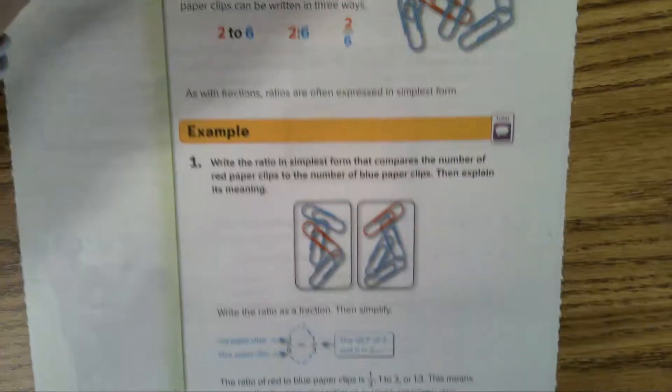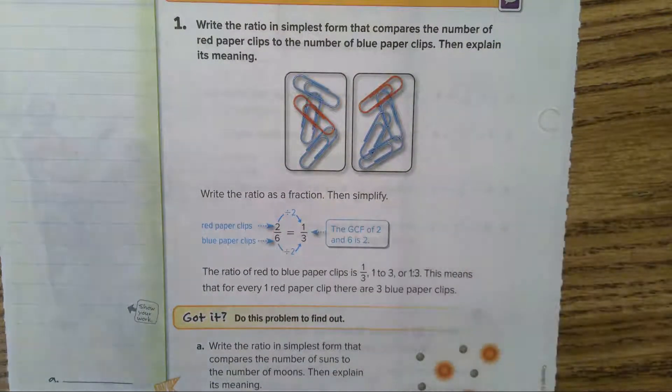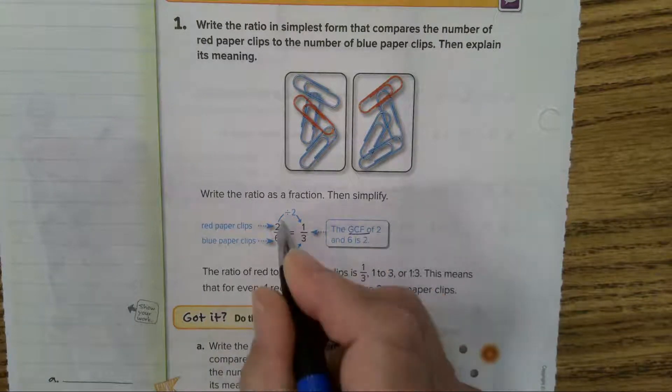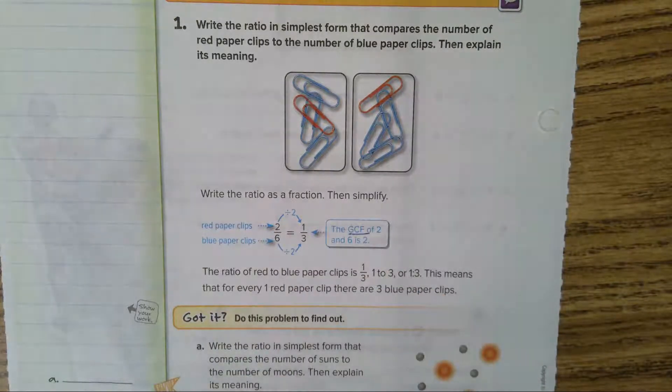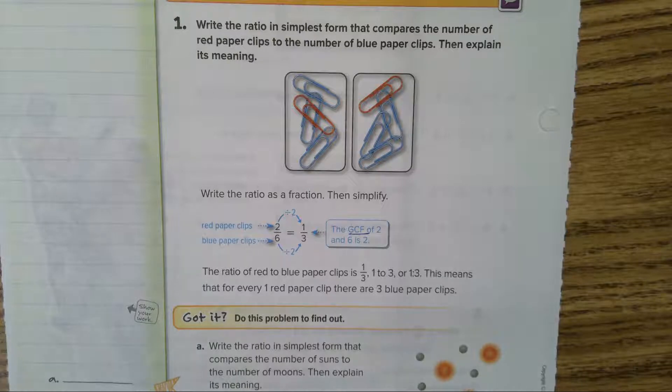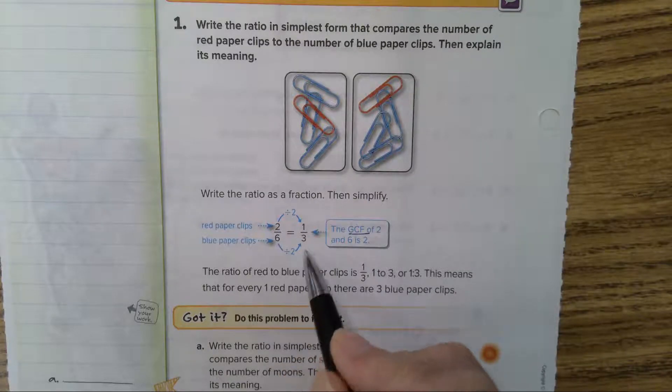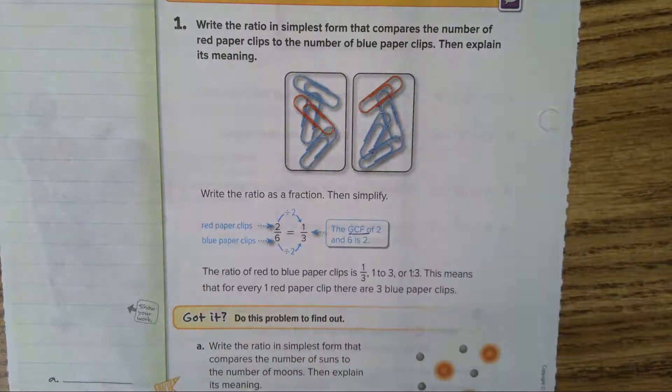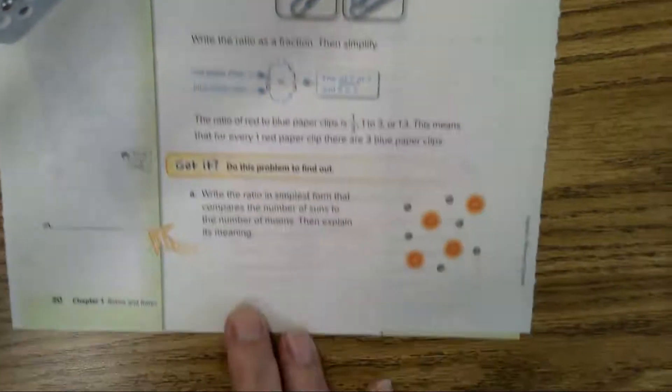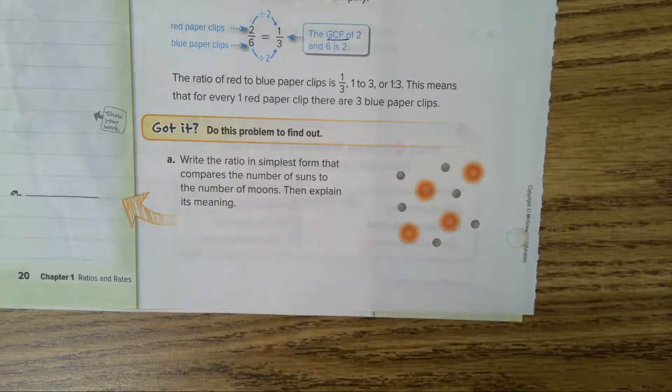A ratio of two red paper clips to six blue paper clips can be written three ways. As with fractions, ratios are often expressed in simplest form. When you have a fraction, you want to look for the greatest common factor between the two numbers.